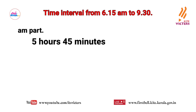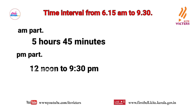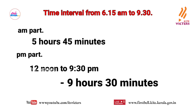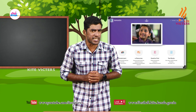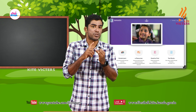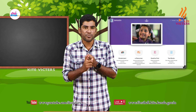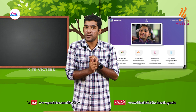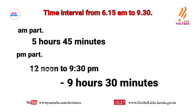Now look at the PM part: twelve noon to nine thirty PM. What is the time interval from twelve noon to nine thirty PM? From twelve noon to one PM is one hour, to two PM two hours, three PM three hours — likewise nine PM is nine hours, then thirty minutes more. So the time interval from twelve noon to nine thirty PM is nine hours thirty minutes.